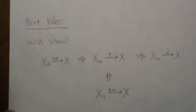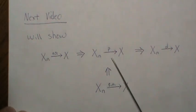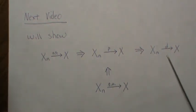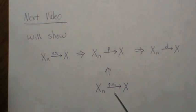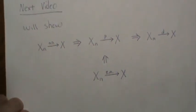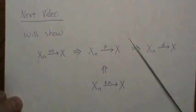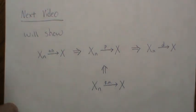In the next video or two, we're going to show that convergence almost surely implies convergence in probability, which implies convergence in distribution. Convergence in quadratic mean also implies convergence in probability. That's all for this video on definitions. I hope you enjoyed it — if you did, please like the video and subscribe so you don't miss the next one. Thanks, bye.